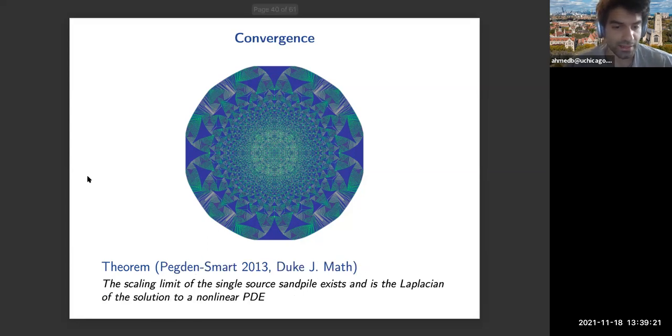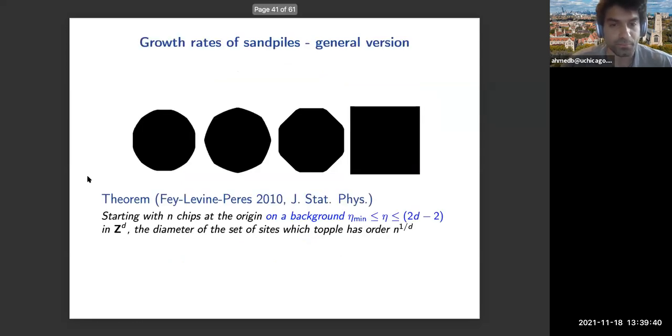This compactness was used in a breakthrough by Wesley Pegden and Charles Smart in 2013, together with the theory of viscosity solutions, to show that the scaling limit of this single source sandpile exists as an object of study and it's the Laplacian of the solution to some nonlinear partial differential equation, a viscosity solution. Both of the results which I just described are much more general. They apply to sandpiles on arbitrary periodic graphs, in particular to the d-dimensional integer lattice, on backgrounds which are bounded from below by something and from above by 2d minus 2.